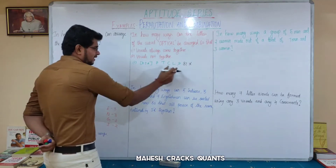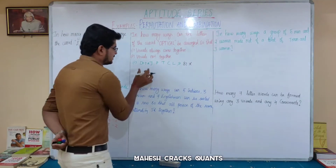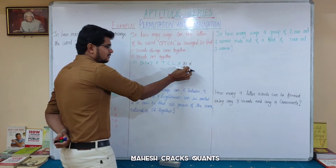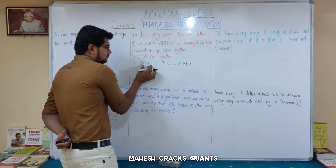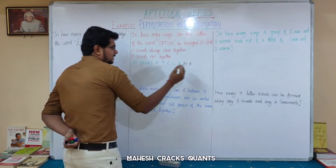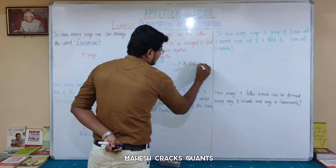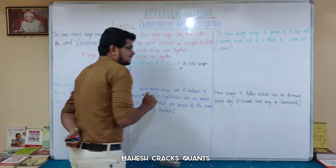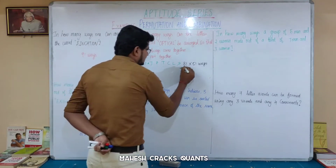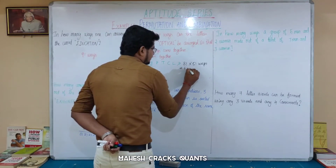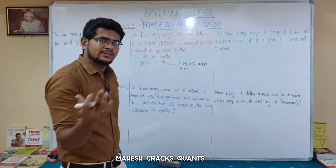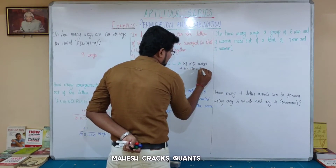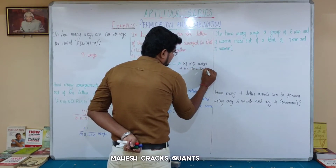So 3-factorial = 3 × 2 × 1 = 6, and 5-factorial = 5 × 4 × 3 × 2 × 1 = 120. So 6 × 120 = 720 ways when vowels are always together.